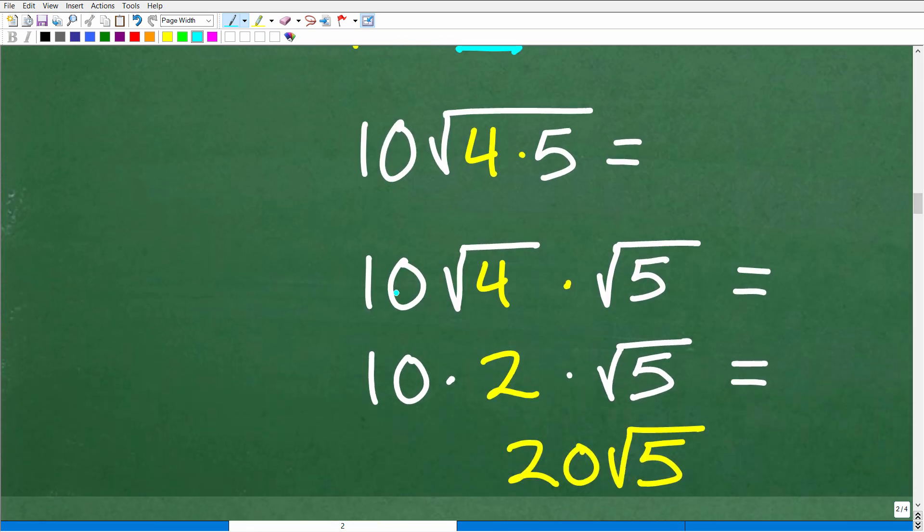So this would be equal to 10 times the square root of 4. Again, we're using these properties here, the property of square roots, the square root of 4 times the square root of 5.